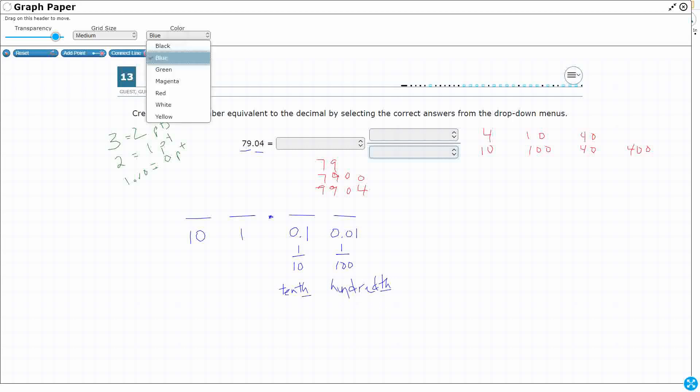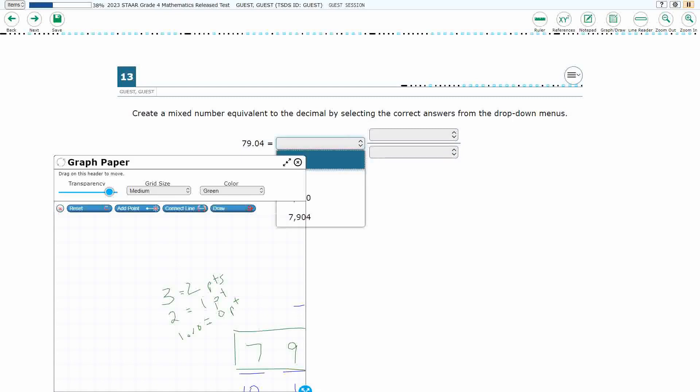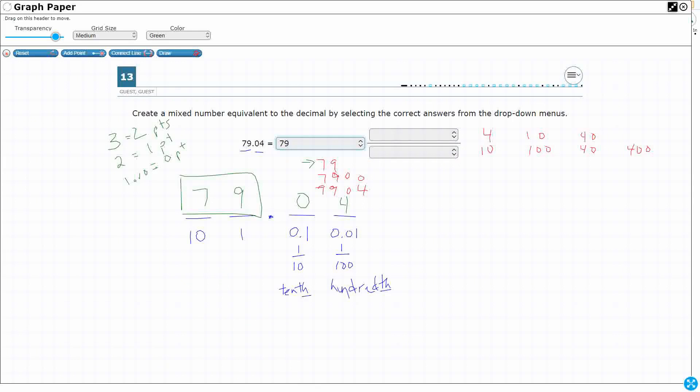All right. So let's write our number there. Seven, nine, decimal, zero, four. Well, how do we make this into a mixed number? Well, here's the easy thing. Our mixed number, our whole number, anything left to the decimal is your whole number. So it's going to be seventy-nine something. The seventy-nine doesn't turn into seventy-nine hundred or seven thousand nine hundred four. So that's just going to stay as your seventy-nine. So that's pretty simple. That doesn't change.